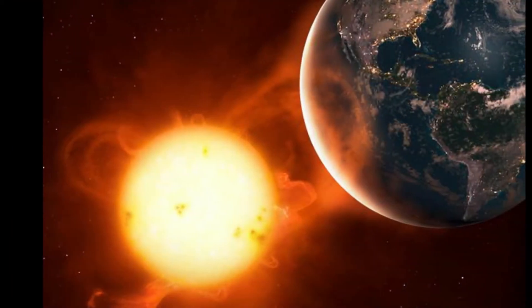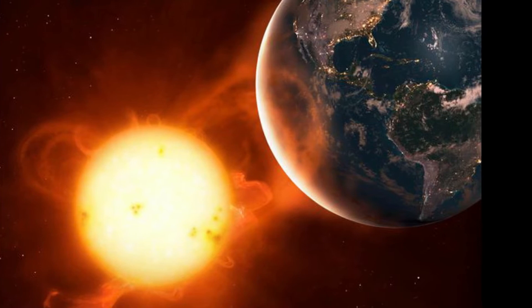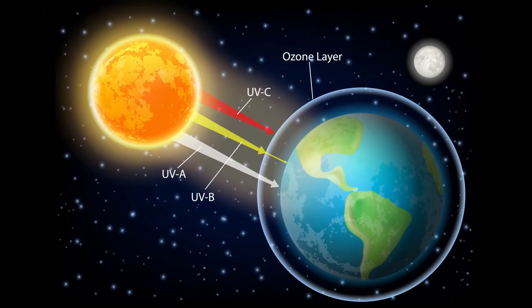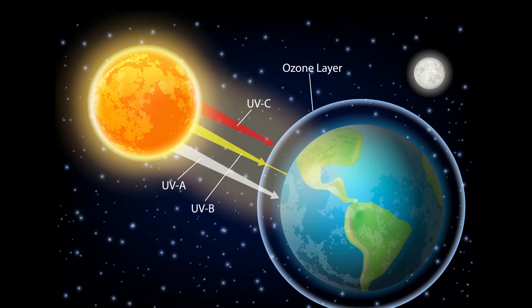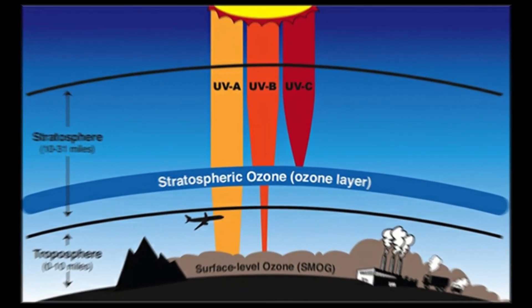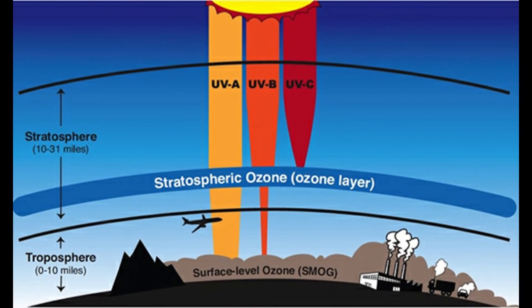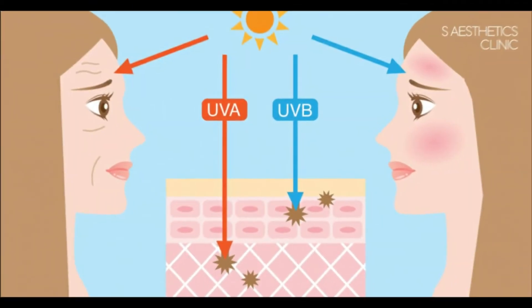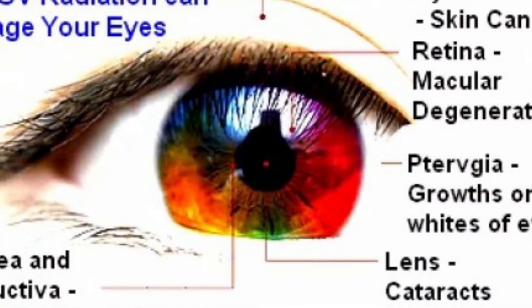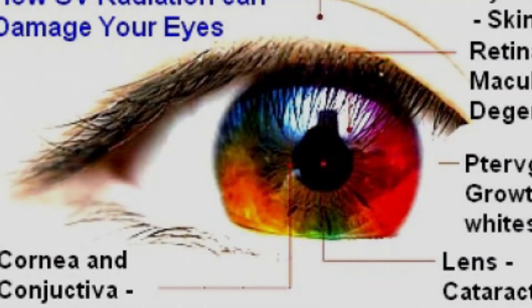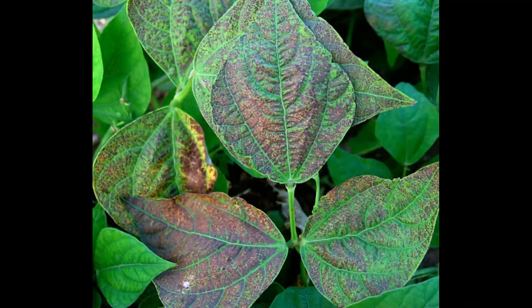Depending on where it is in the atmosphere, ozone affects life on Earth in either good or bad ways. It reduces the amount of harmful UV radiation reaching the Earth's surface and protects life on Earth by absorbing harmful ultraviolet B radiation from the sun. Prolonged exposure to ultraviolet B radiation is linked to skin cancer, genetic damage, and immune system suppression in humans and animals, and lower-yielding agricultural crops.